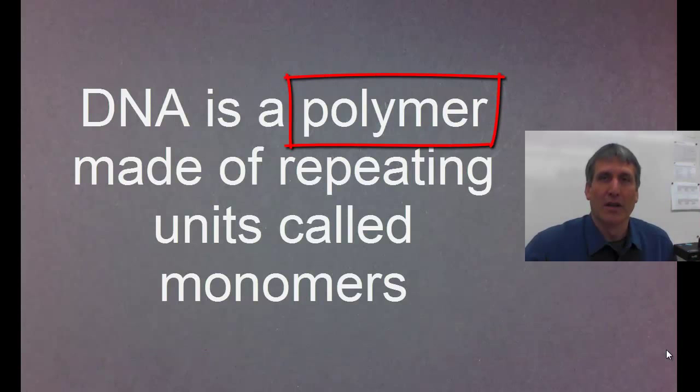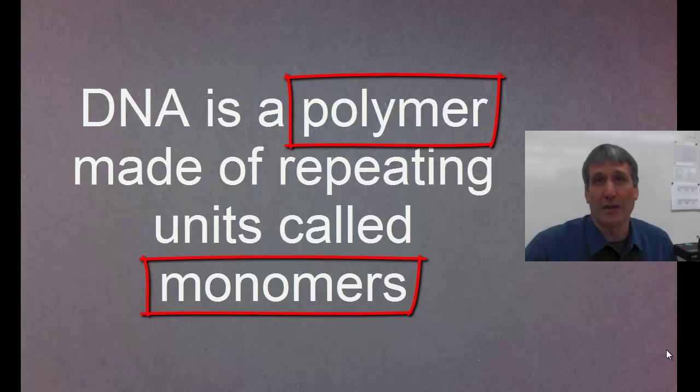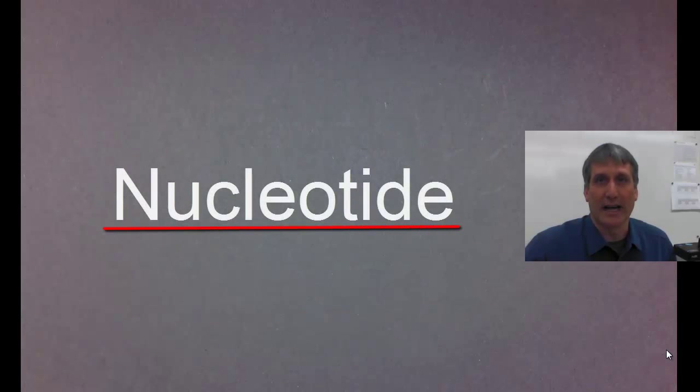DNA is a polymer, which means it is made up of repeating units called monomers. The monomer that makes up DNA is called a nucleotide.